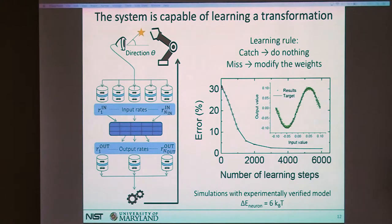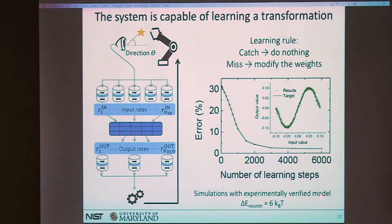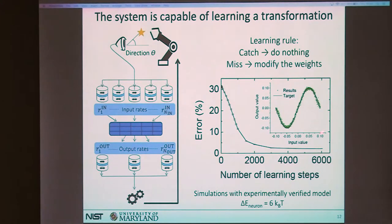In simulation results for a more complex task — computing the sign of the input value — we plot the error (distance between gripper and target) versus the number of learning steps. As expected, the error decreases with learning steps and reaches a minimum that depends on system parameters. This shows our system can learn a transformation with a simple rule using stochastic neurons.